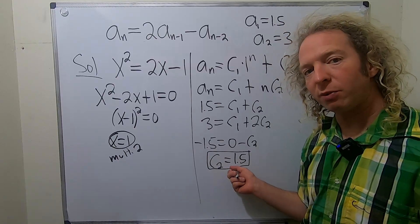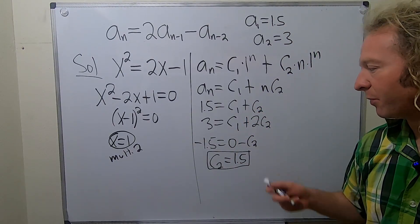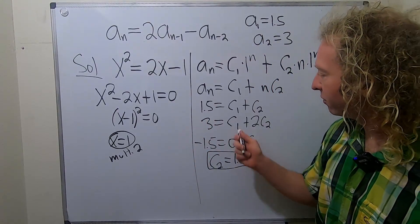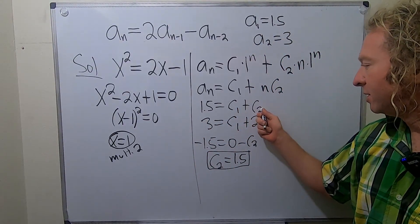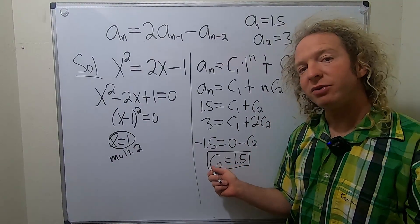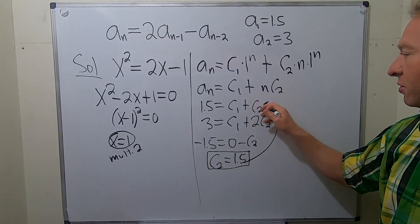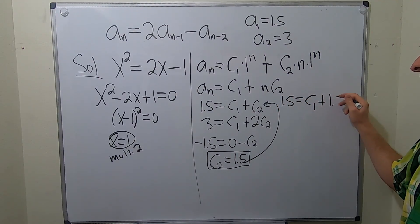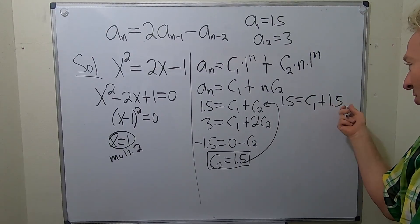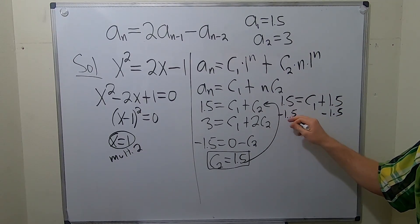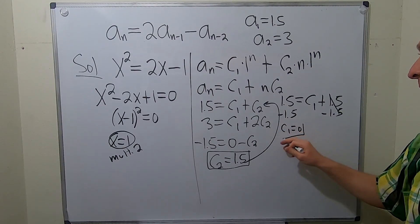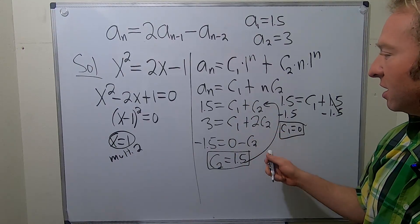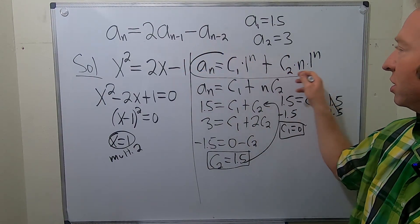I'm going to do it. I'm going to subtract. So 1.5 minus 3 is negative 1.5. c1 minus c1 is 0. c2 minus 2c2 is negative c2. So we end up with c2 equals 1.5. So that is our c2. Now that you have c2, you can plug this in back in here to find c1. Again, all we did was subtract, right? 1.5 minus 3 is negative 1.5. c1 minus c1 is 0. And then c2 minus 2c2 is negative c2. Now what you do is you take this and you plug it back in here.